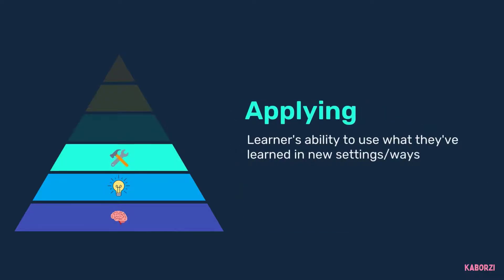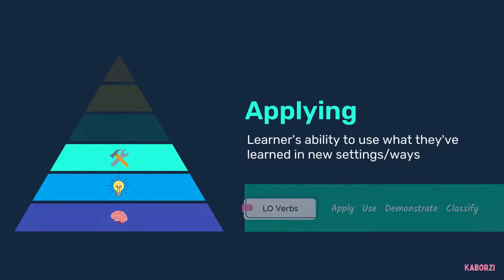Applying — this refers to the learner's ability to use knowledge in new settings, or using information learned in new ways to solve problems. To create learning objectives around applying, you can use verbs like apply, use, demonstrate, and classify.